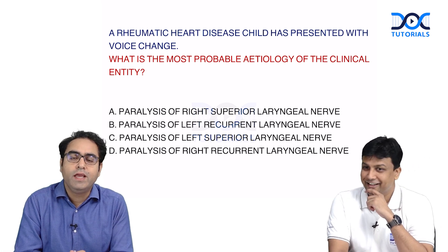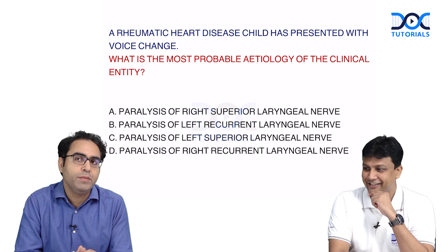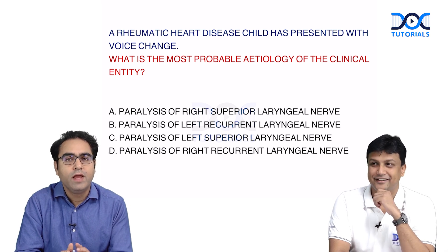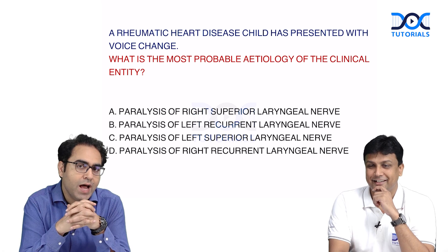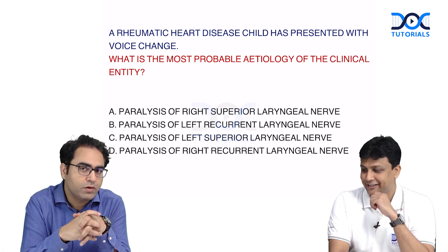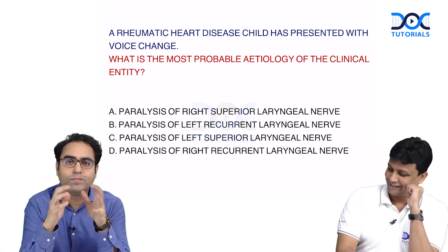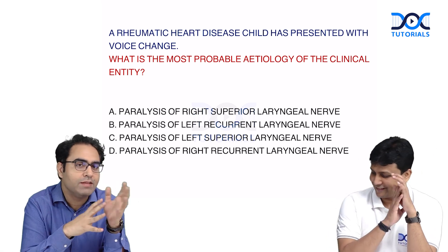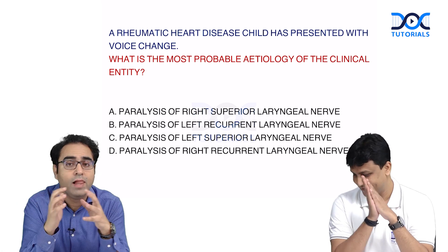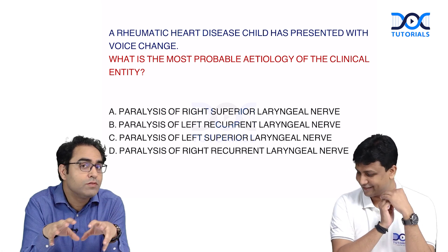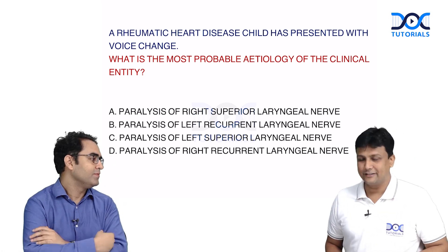This is the beauty of integration — where you are super clear about the anatomy, you can think about disorders and arrive at a rational diagnosis. The choices are very close: right SLN, left SLN, right RLN, or left RLN. Which one has got paralyzed in this particular case?